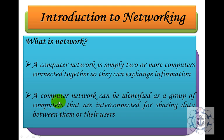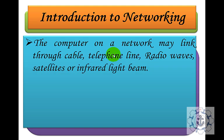A computer network is a group of computers that are interconnected and interlinked for sharing data between them or their users. The computers on a network may be linked through a cable, telephone line, radio waves, satellites, or infrared light beams.